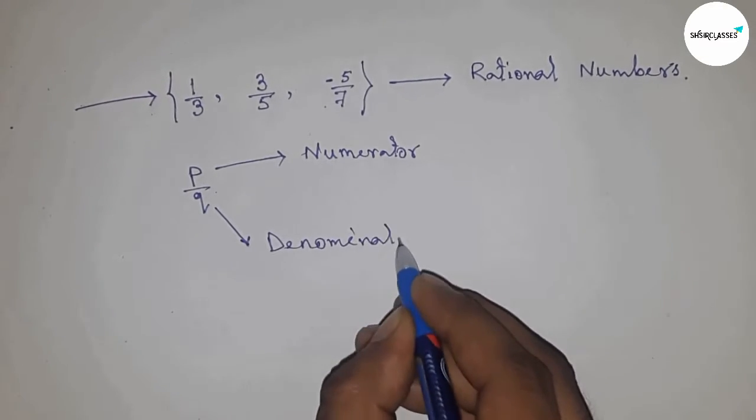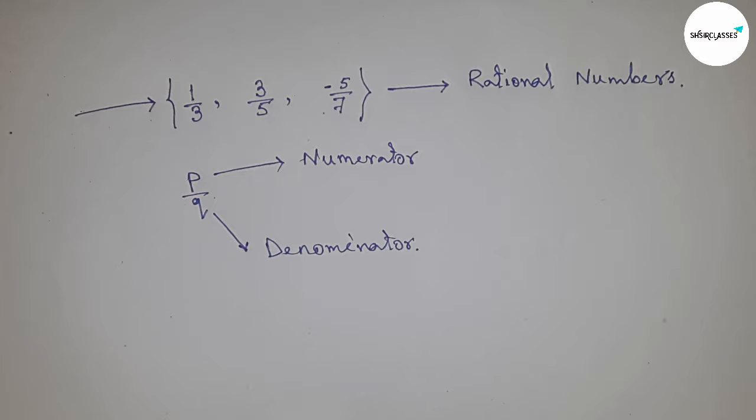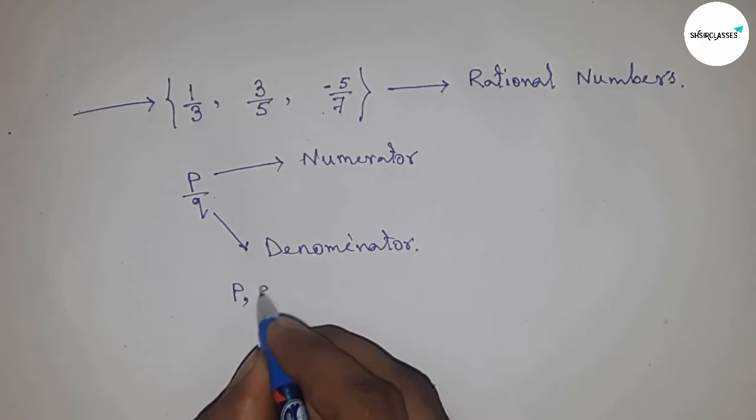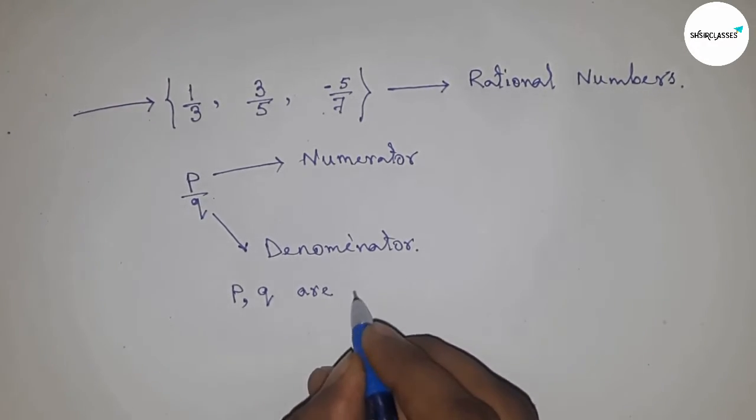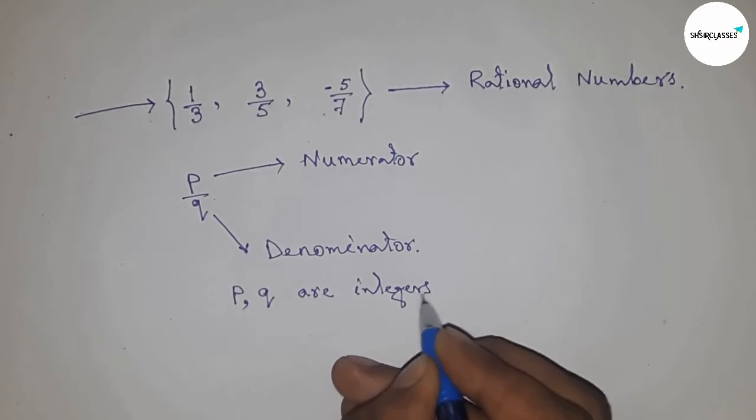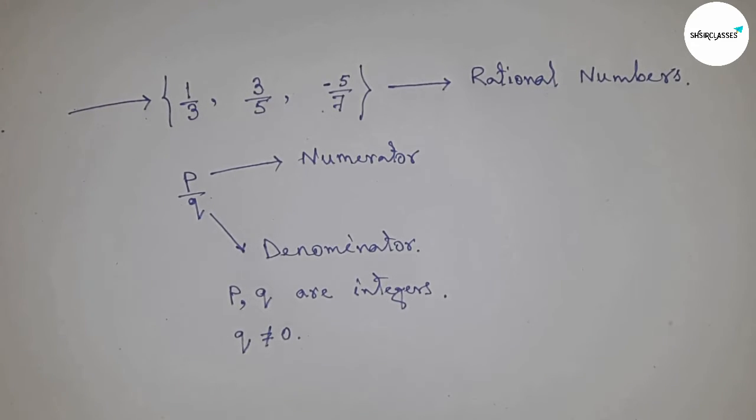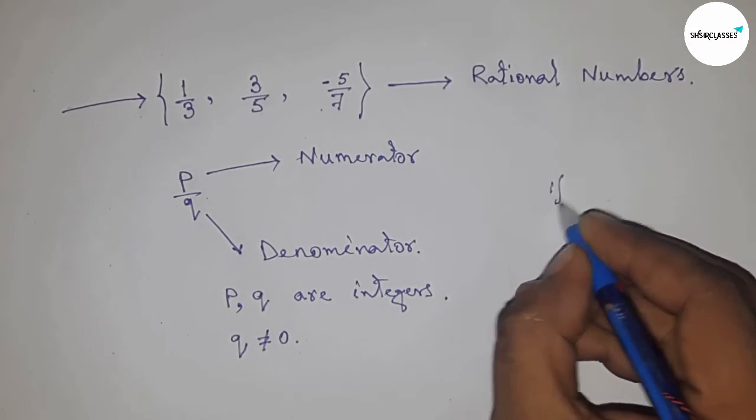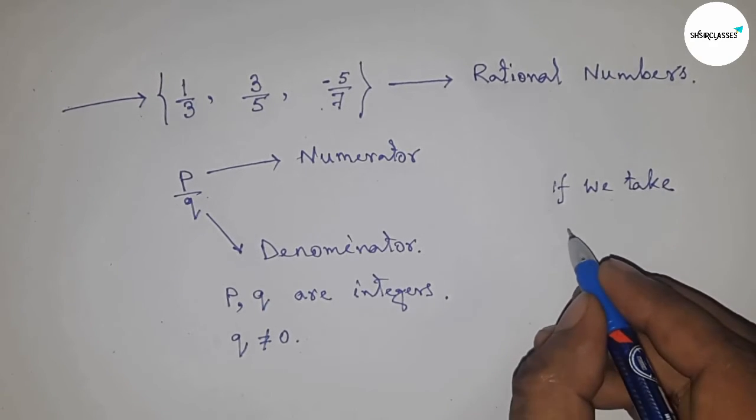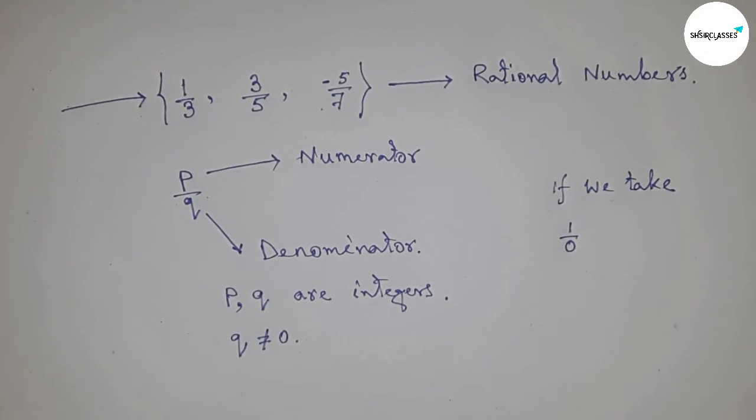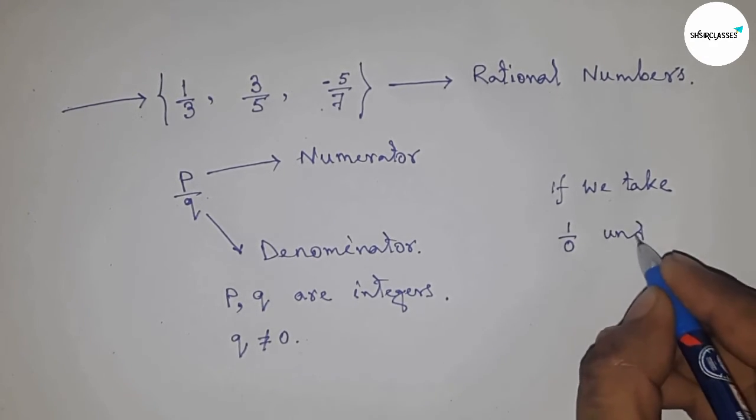The first condition is that p and q are integers. And q can never be zero. That means q not equal to zero. If you take q equal to zero, for example 1 by 0, which is undefined. So q can never be zero.